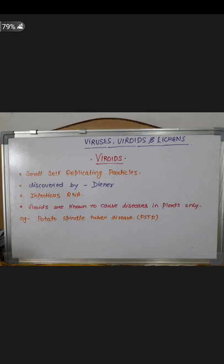Viroids are small self-replicating particles. They were discovered by Diener. Their RNA is infectious — this is an important point that comes in questions. Viroids are known to cause diseases in plants. For example, Potato Spindle Tuber Disease is caused by viroids.